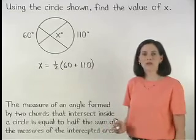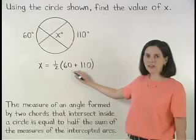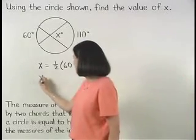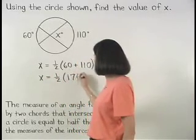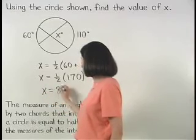Solving from here, we first simplify inside the parentheses. 60 plus 110 is 170, so we have x equals one half times 170, or x equals 85.